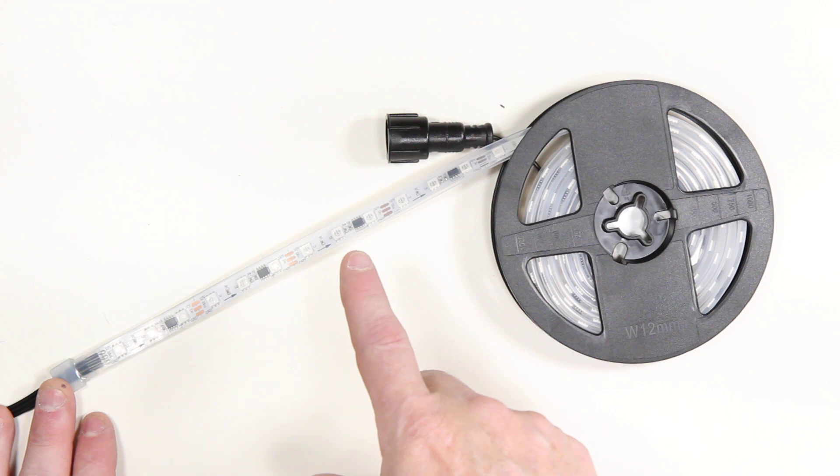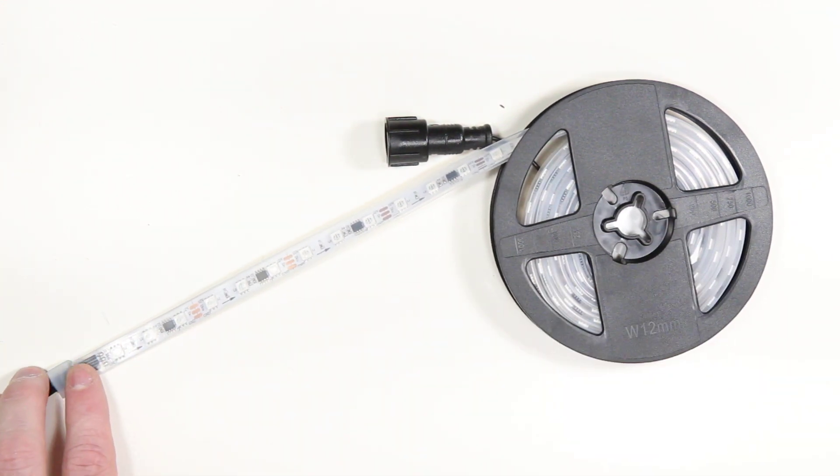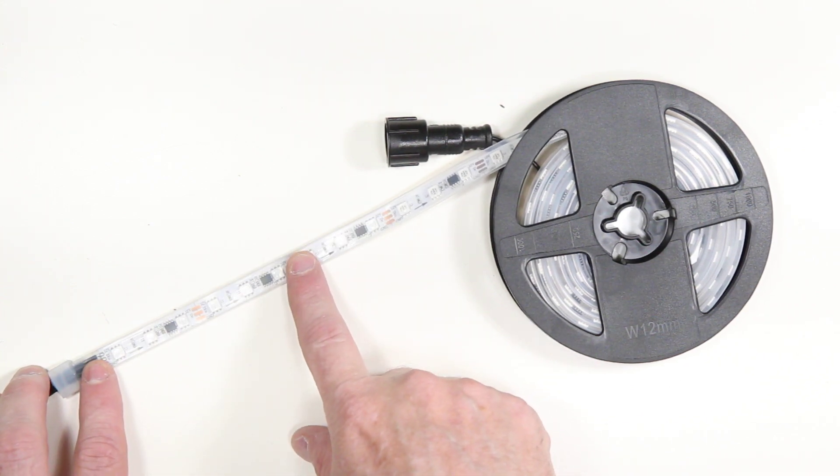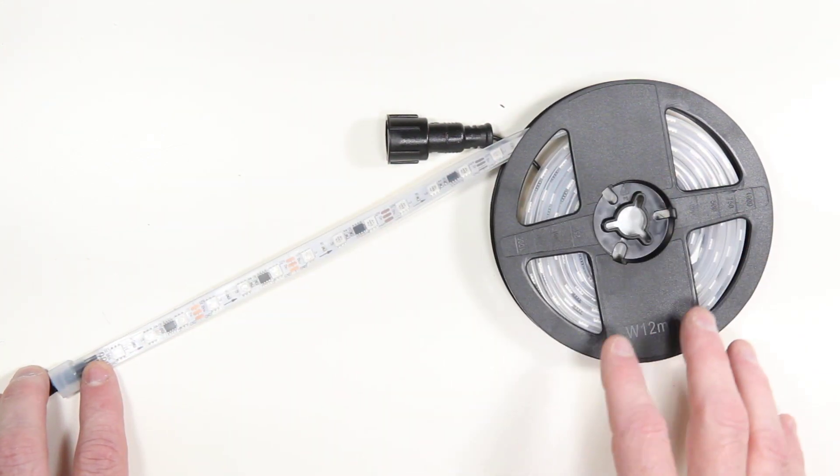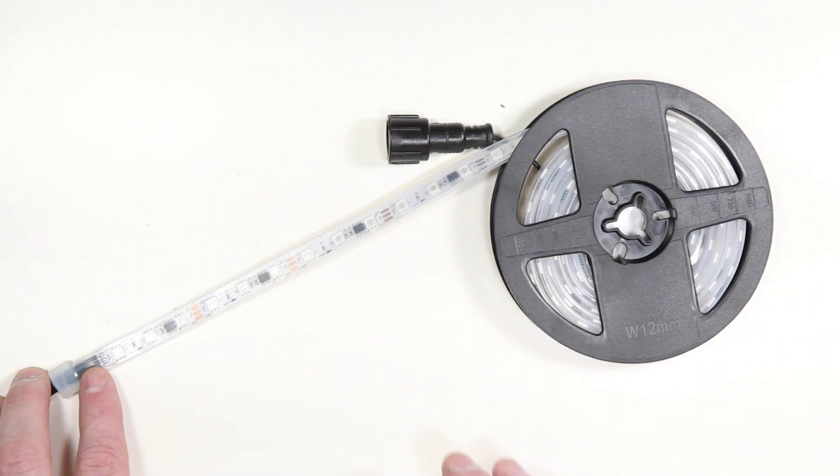That's 6.5 feet total from this end of the strip to the other, not including the pigtails. And because it has 60-20, it means there's 60 LEDs per meter, so that means there's 120 total LEDs in this roll. And there are 40 pixels per roll.